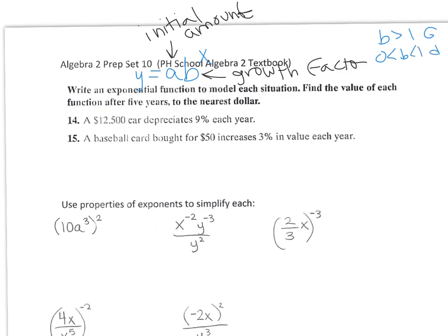If B is greater than 1, it's exponential growth. If B is between 0 and 1, then it's decay, so it's decreasing.